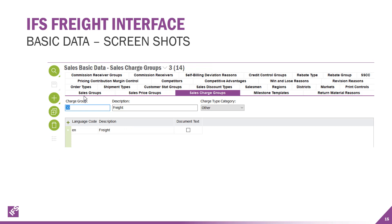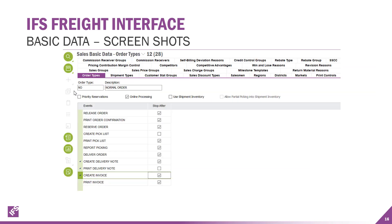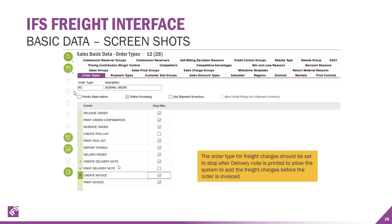There are also sales charge groups you can set up, and your order types — you'd want to utilize this in a couple different ways. We definitely want to put a stop after the create delivery note, because at that point in time you would go over to the freight interface, over to the UPS terminal running UPS WorldShip, enter in all the information, let it write back, and then continue on with printing your delivery note and creating an invoice. It's important to utilize the right order type for these.